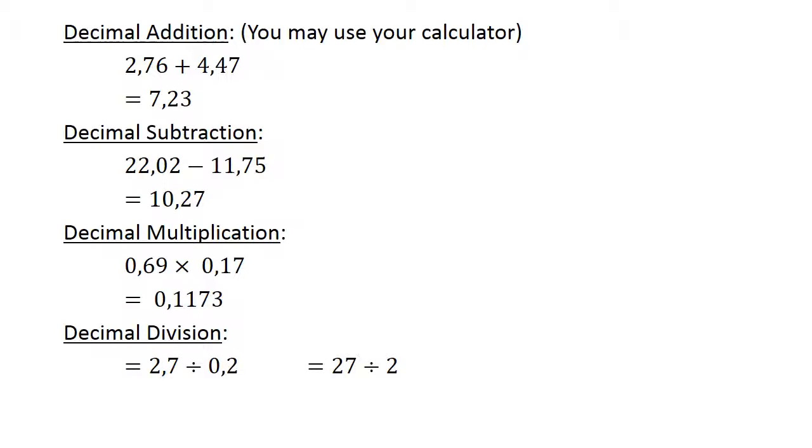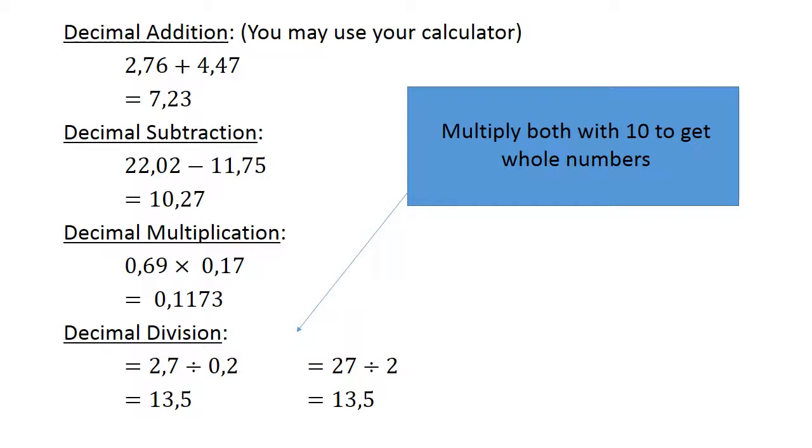Decimal division. 2.7 divided by 0.2. Multiply both with 10 to get whole numbers. 27 divided by 2 equals 13.5.